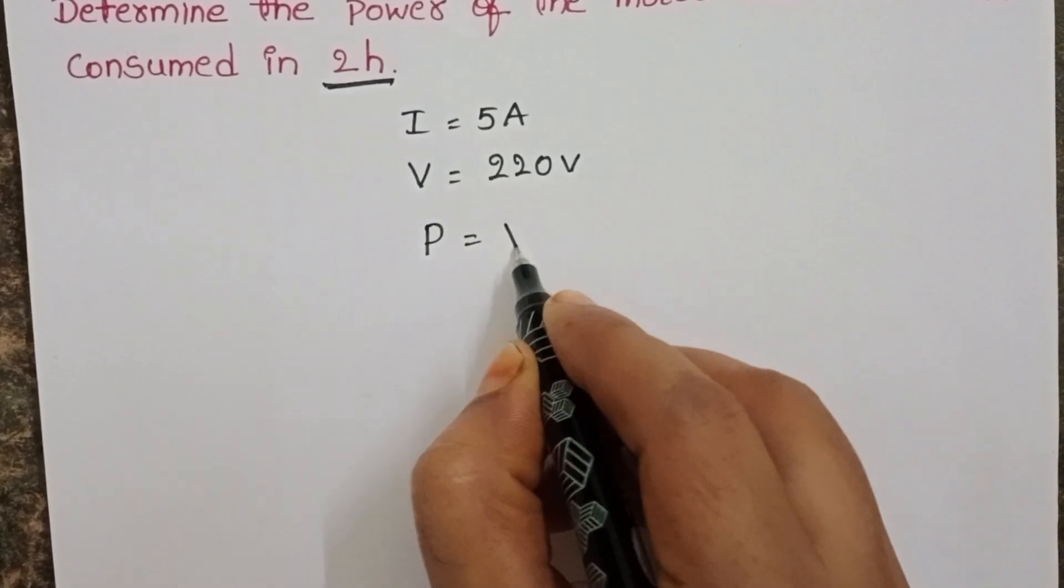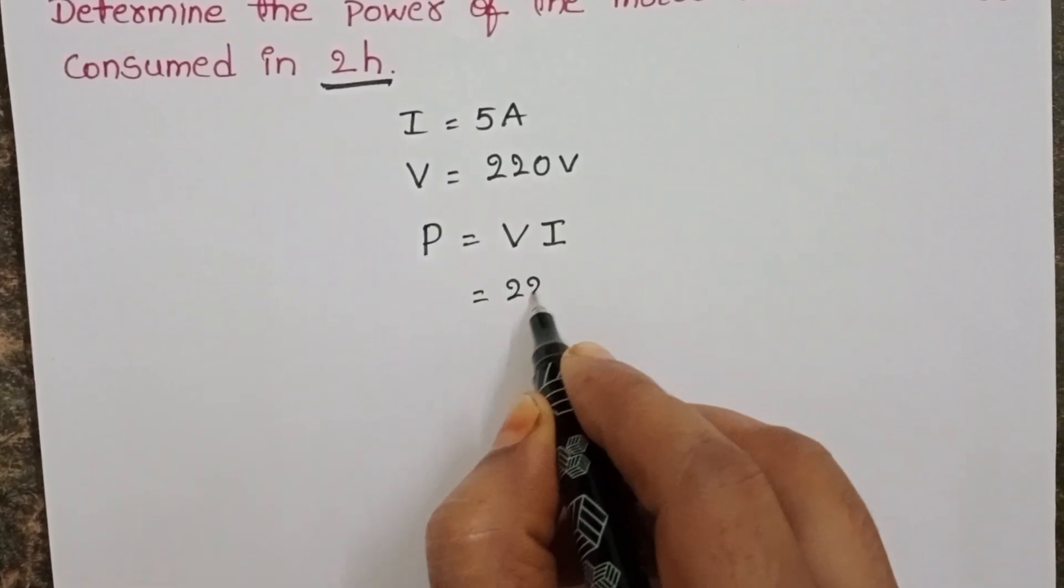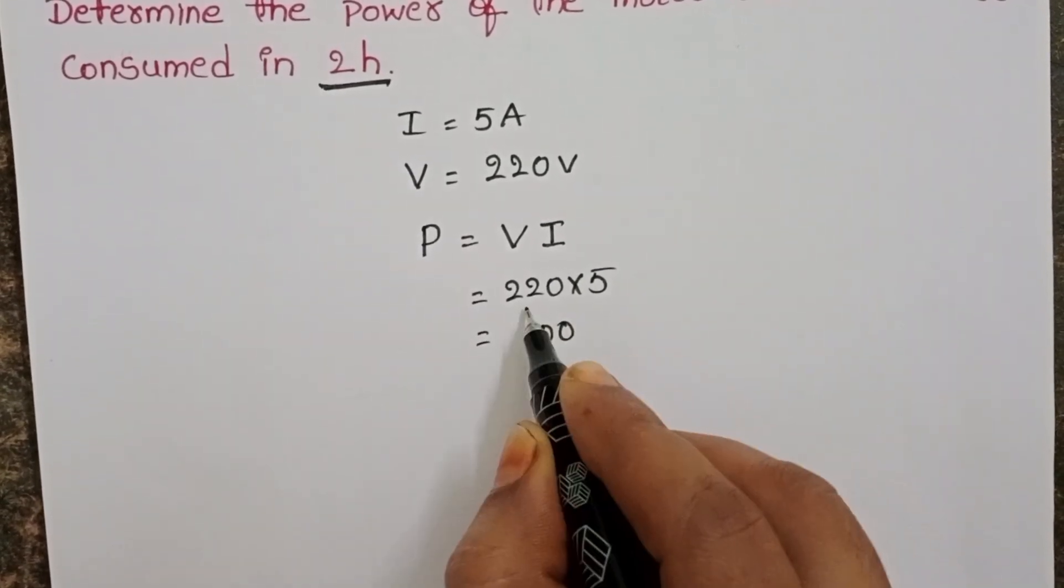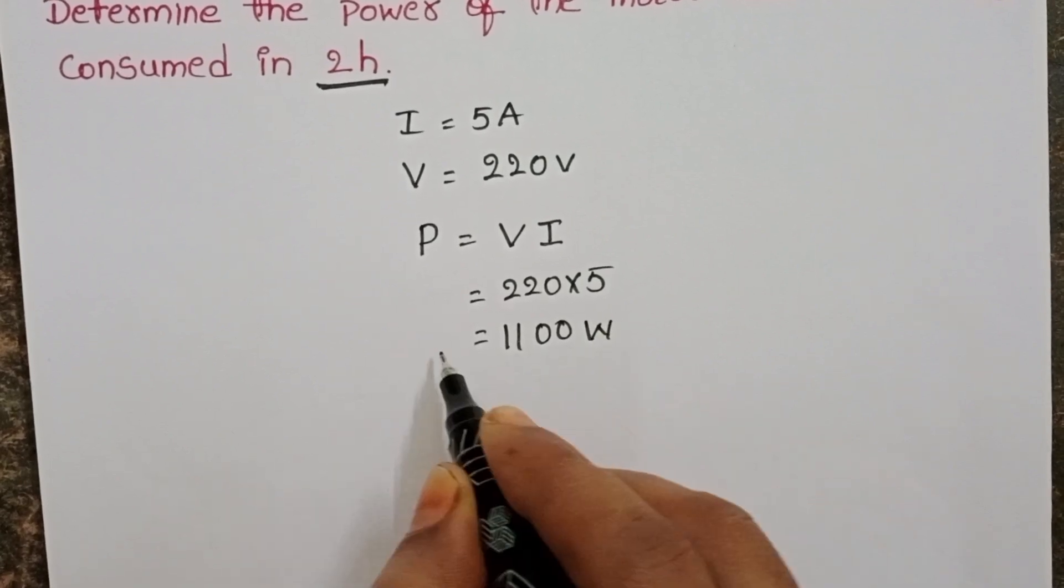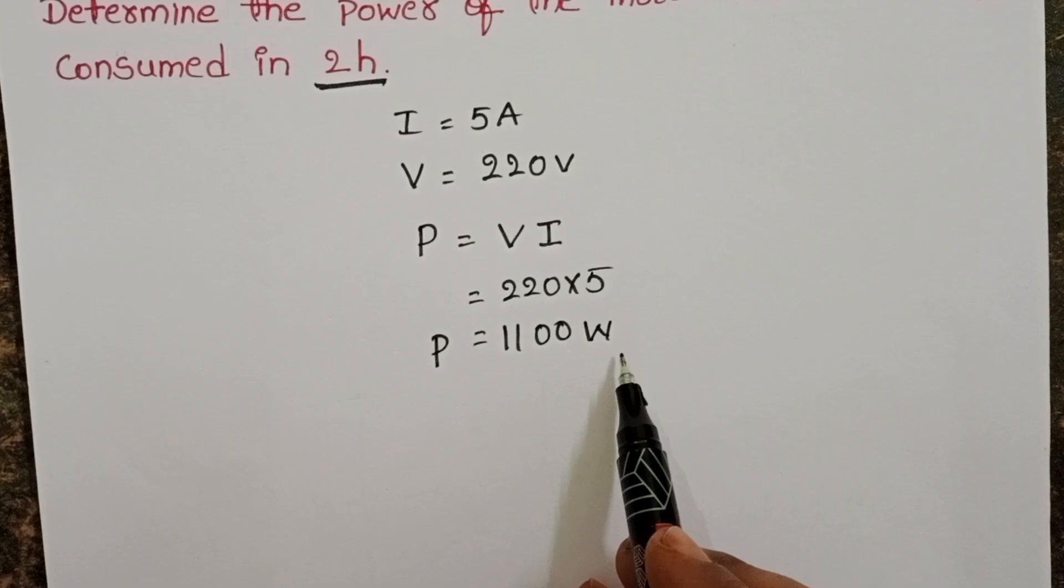Power is equals to electric potential into electric current. 220 into 5, which equals 1100. The power consumed by the electric motor in the circuit is 1100 watts.